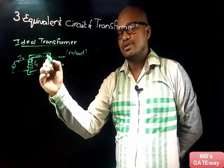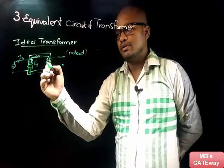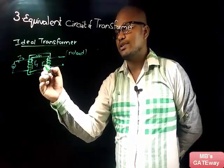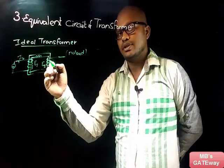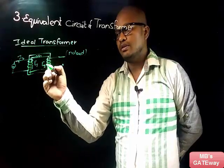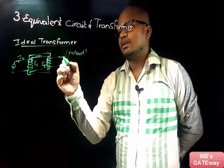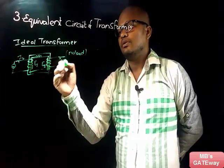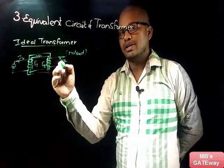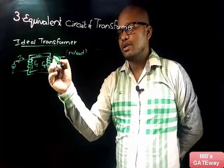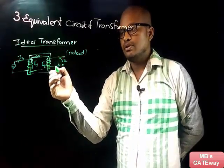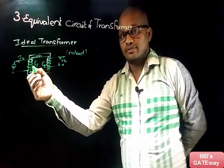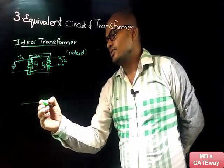The same flux links with the secondary winding, and according to Faraday's law of electromagnetic induction, an EMF is induced in the secondary winding — let that be E2. Let the terminal voltage be V2. Since the secondary winding is open-circuited, the secondary current I2 is zero.